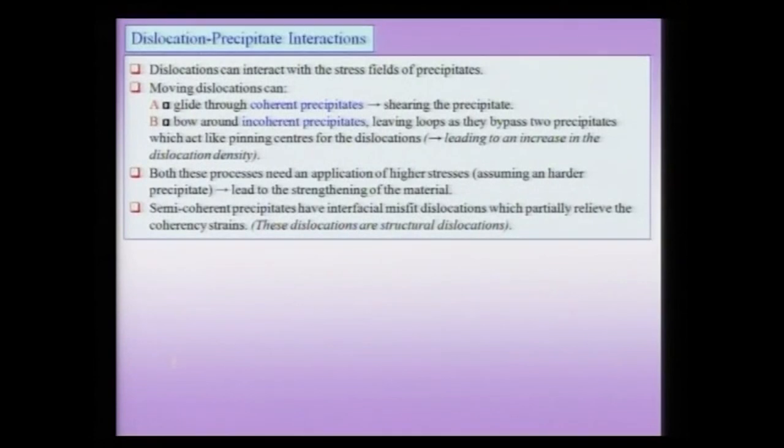Dislocations can interact with any of these long-range stress fields, and one important interaction is the dislocation-precipitate interaction. If we start with a pure whisker 100% free of dislocations, we can expect yield stresses of the order of the theoretical shear stress. Presence of dislocations weakens the crystal, so we need mechanisms to strengthen it — one is solid solution strengthening by adding substitutional alloying elements which raise the lattice friction. Interstitial atoms also give solid solution strengthening. Another very popular mechanism is precipitation hardening, in which precipitates are produced in a material to give a hardening effect.